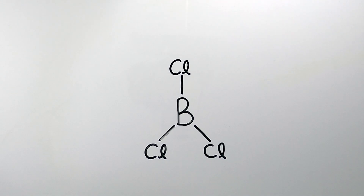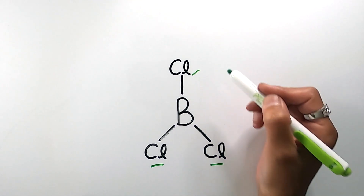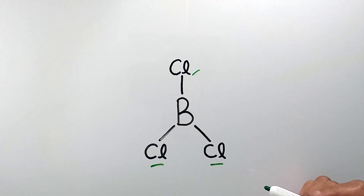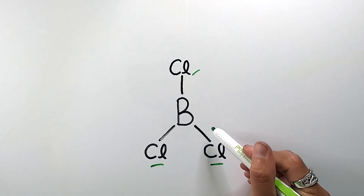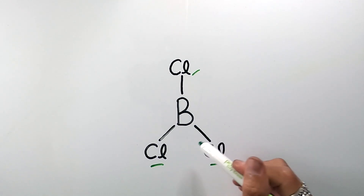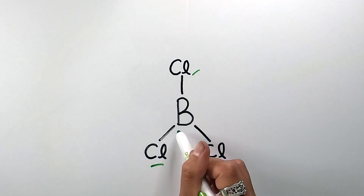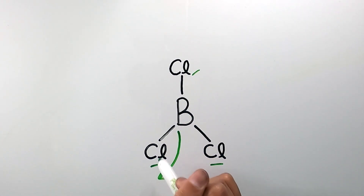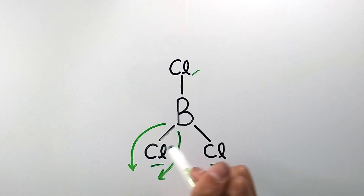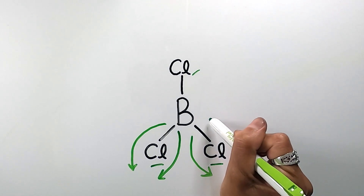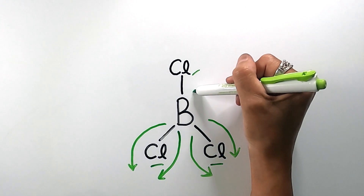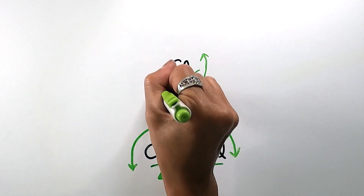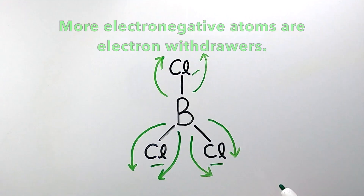So I have borotrichloride. The chlorine atoms are more electronegative than the boron atom. What it means to be more electronegative is that they have more of an attractive pull on electron cloud density. So they will pull electrons from the boron toward themselves. This is known as an electron-withdrawing effect, so you can call the chlorine atoms electron-withdrawing groups.